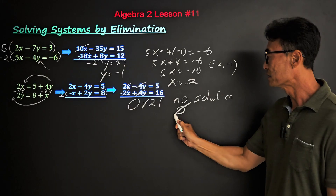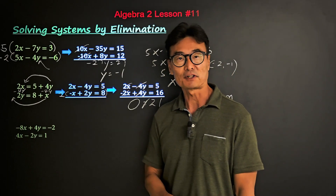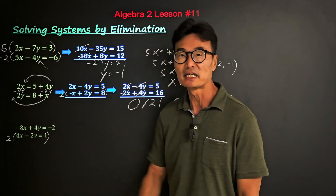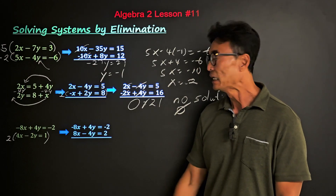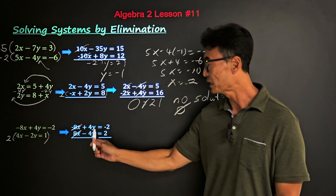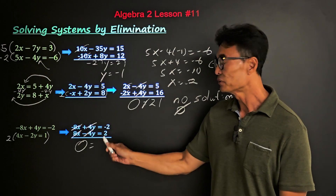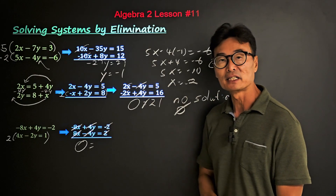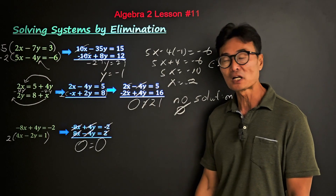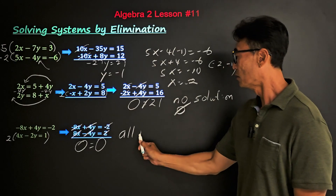In the last example, we have negative 8x and 4x. Multiplying the second equation by 2 gives positive 8x, which cancels with negative 8x. Then positive 4y and negative 4y also cancel, and on the right side negative 2 and 2 add to give 0 as well. We get 0 equals 0.